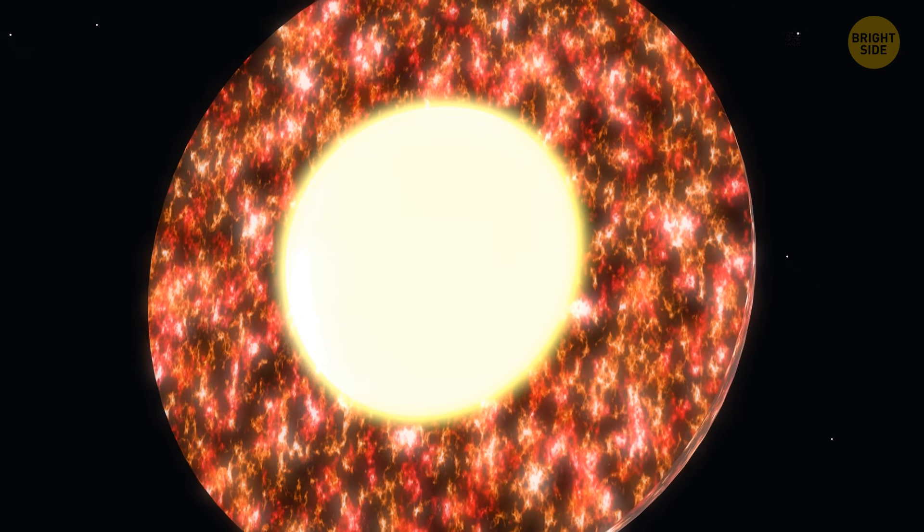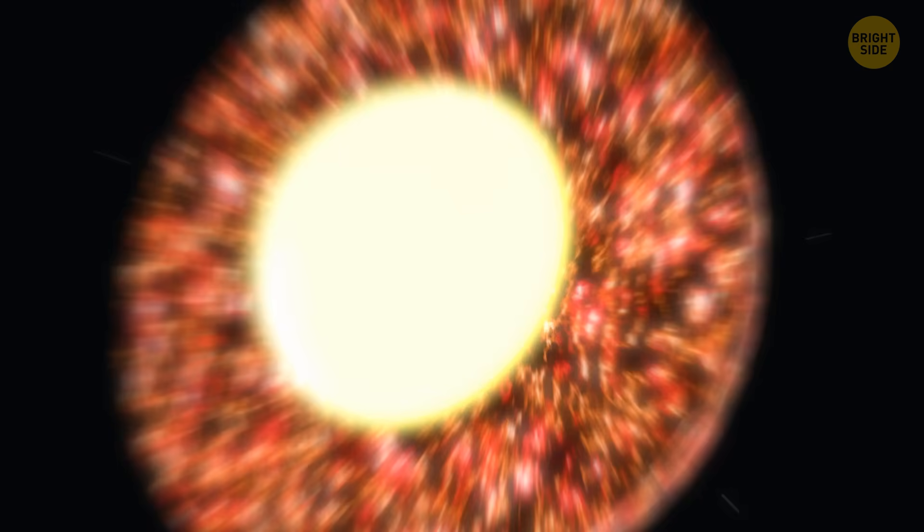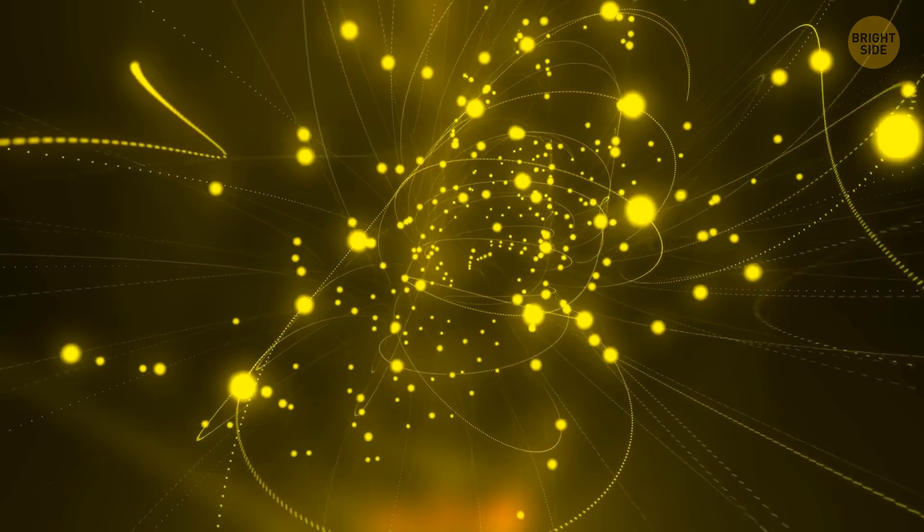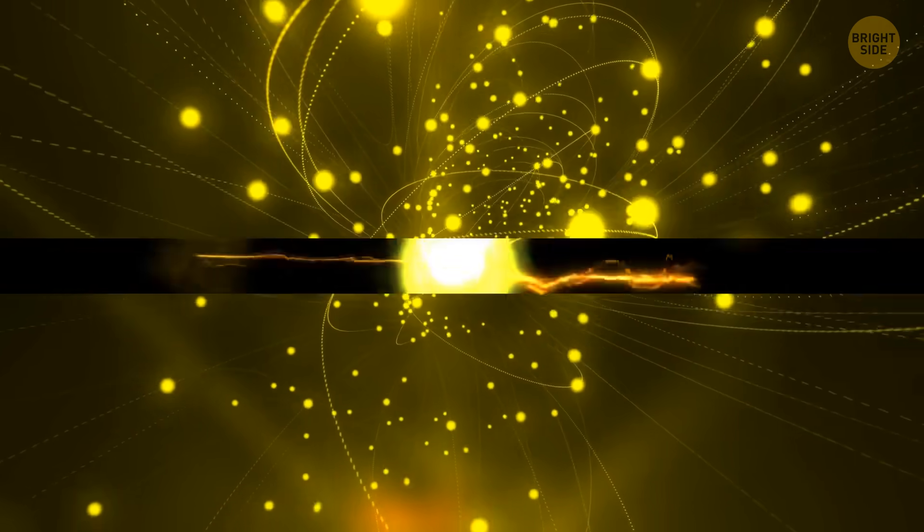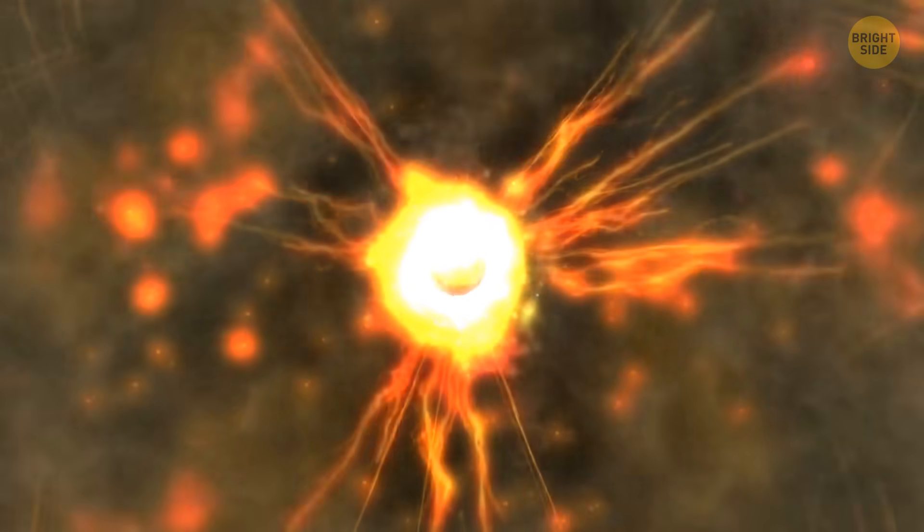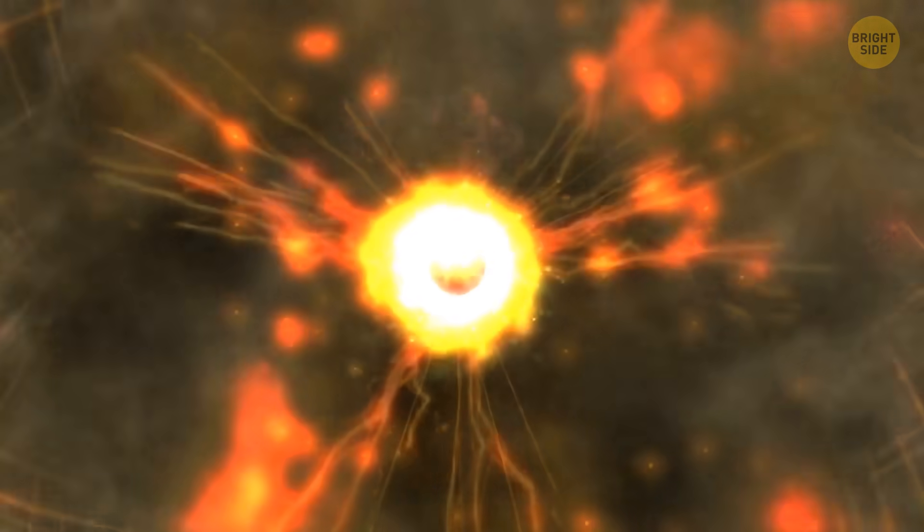The energy created from fusion and the bustling photon party tries really hard to escape the sun's core. But the core is so dense, like me, and the pressure is so big, that the energy takes its sweet time to make its way out. It bounces around.